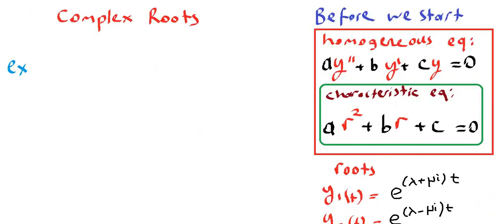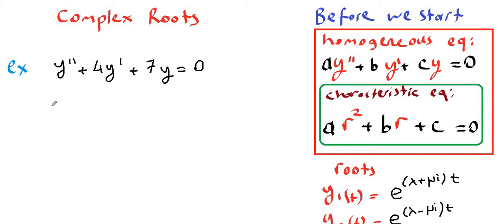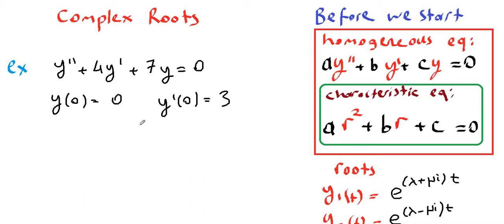Let's start with the example: y double prime plus 4y prime plus 7y equals 0, with y of 0 equal to 0 and y prime of 0 equals 3. We need at least two initial conditions.